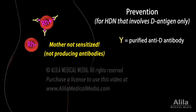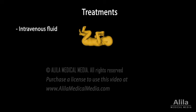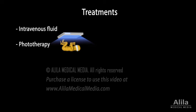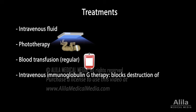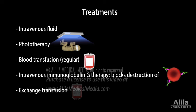Infants born with HDN are usually treated with intravenous fluid and phototherapy, a procedure in which a certain spectrum of light is used to convert bilirubin to a form that is easier for the infant to excrete. Severe anemia may be treated with blood transfusion, intravenous immunoglobulin G therapy, which works by blocking the destruction of antibody-coated red blood cells, and exchange transfusion, where the baby's blood is essentially replaced with RH negative donor blood. This procedure is very effective at removing bilirubin and reducing the destructive effect of the mother's antibody, but may have adverse effects.